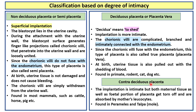Contradeciduous placenta. In contradeciduous placenta, the implantation is intimate, but both the maternal tissue as well as the fetal portion of the placenta are absorbed by the mother's leukocytes after delivery. This is found in peramel and talpa.